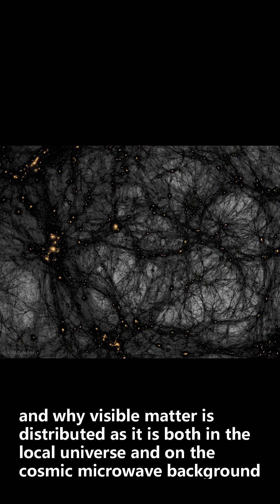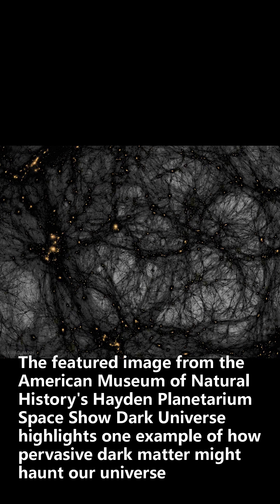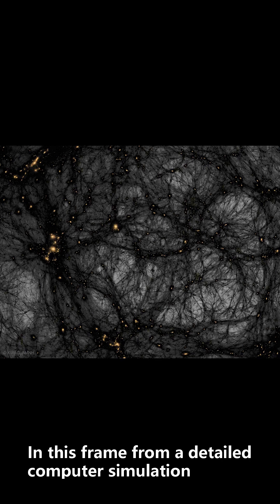Visible matter is distributed as it is both in the local universe and on the cosmic microwave background. The featured image from the American Museum of Natural History's Hayden Planetarium Space Show Dark Universe highlights one example of how pervasive dark matter might haunt our universe. In this frame from a detailed computer simulation,